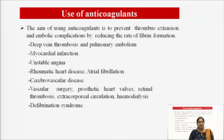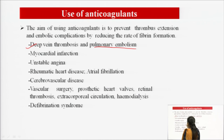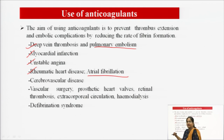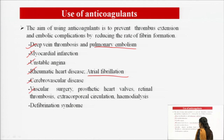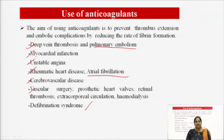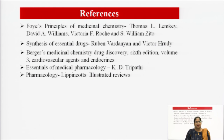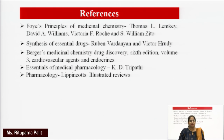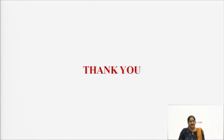The clinical uses of anticoagulants include: deep vein thrombosis, pulmonary embolism, myocardial infarction, unstable angina, rheumatic heart disease with atrial fibrillation, cerebrovascular diseases, various vascular surgeries, prosthetic heart valve replacement, retinal thrombosis, extracorporeal circulation, hemodialysis, and defibrillation syndrome. References include FOYE's medicinal chemistry for chemistry, synthesis of essential drugs and Burger's medicinal chemistry for synthesis, and Essentials of Medical Pharmacology and Lippincott's for pharmacology. Thank you for this lecture.